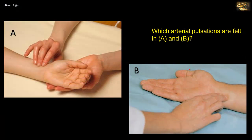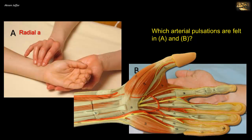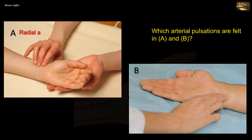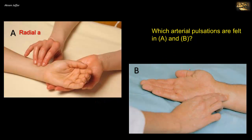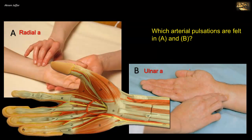Which arterial pulsations are felt in A and B? Artery A is compressed against the front of the distal end of the radius — it is the radial artery. The first tendon encountered medial to the artery is that of the flexor carpi radialis. Artery B is felt most medially and is the ulnar artery; it can be felt just lateral to the tendon of flexor carpi ulnaris.